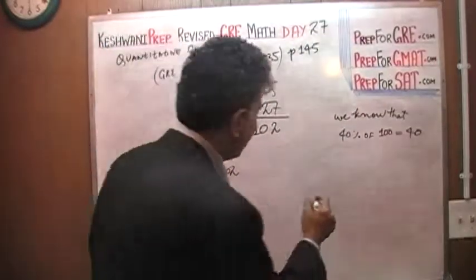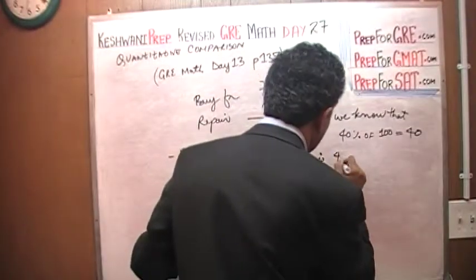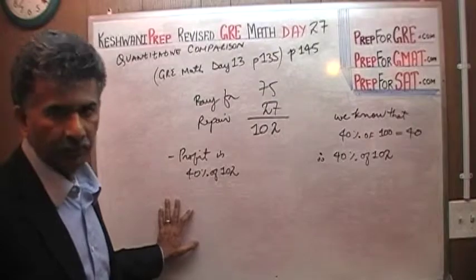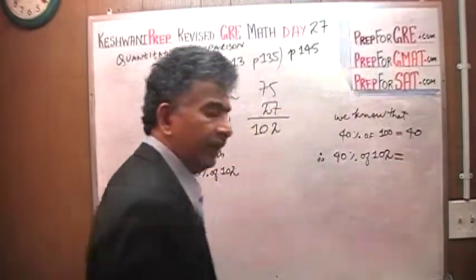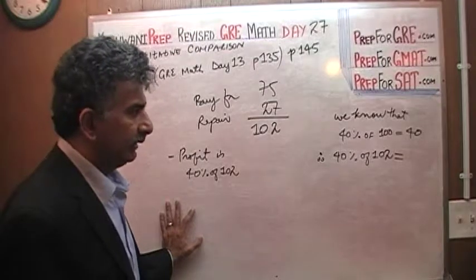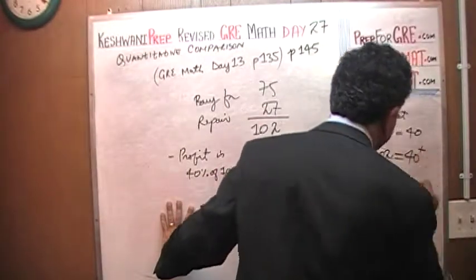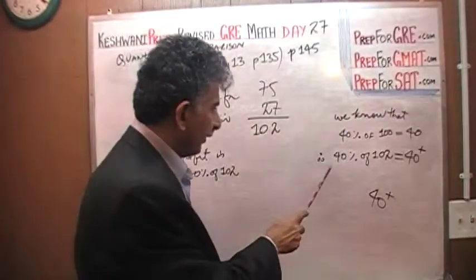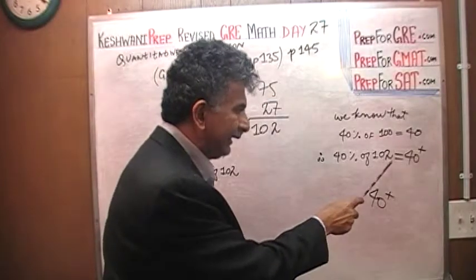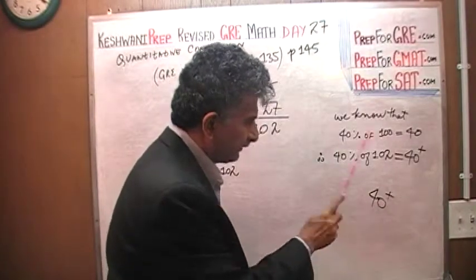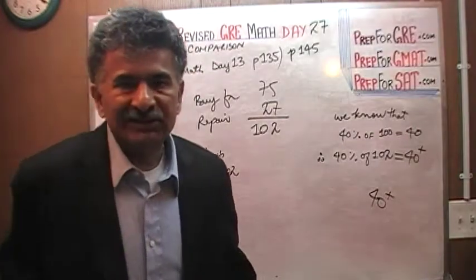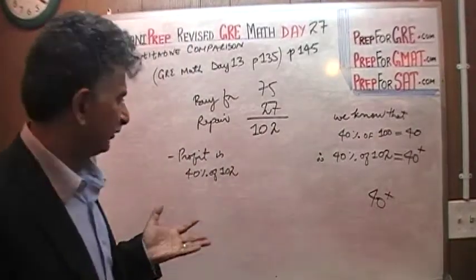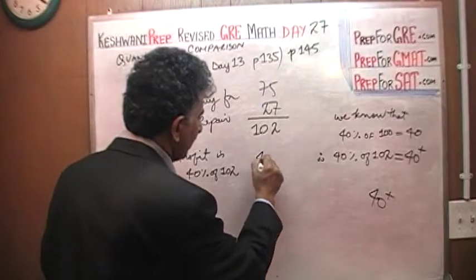40% of 100 is 40. Therefore, 40% of 102 — whatever it is — it's got to be more than 40. We write it as something more than 40. Don't try to figure out a precise figure for 40% of 102; it's not worth it. Nobody is asking us for that. So 40% of 102 is going to be more than 40.